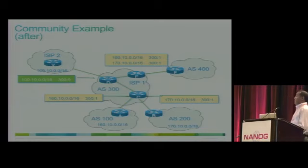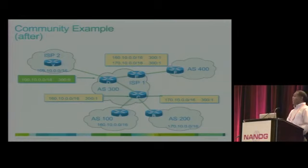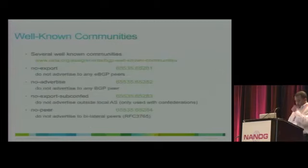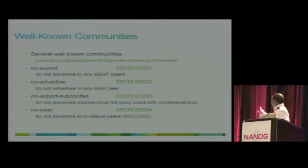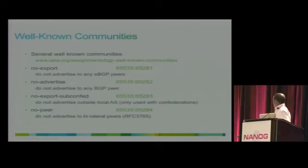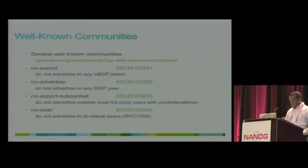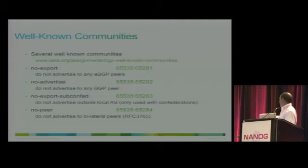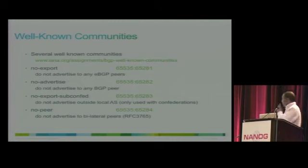It is possible and usually the case that a prefix belongs to multiple different communities with different functionalities. There are well-known communities: 'no-export,' 'no-advertise,' 'no-export subconfed,' and 'no-peer.' We'll touch on no-export: no-export means don't advertise this prefix to another autonomous system. For example, if a router advertises an aggregate prefix without the no-export community, but advertises more-specific prefixes with no-export, the receiving AS will use those more-specifics internally but will not advertise them to any other EBGP peer.